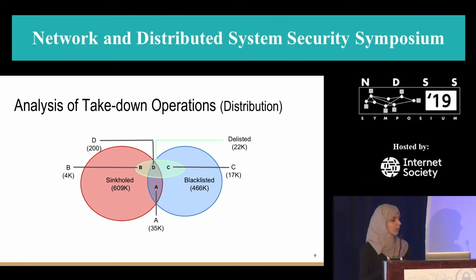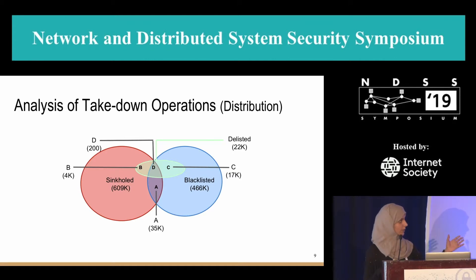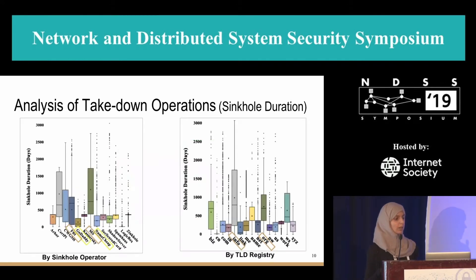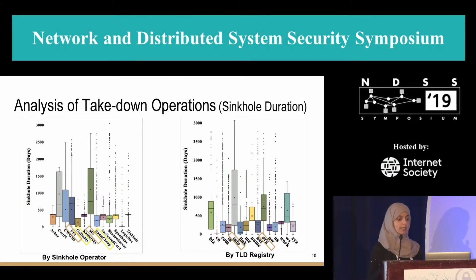This Venn diagram shows the distribution of our dataset. The red circle and the green region represent the delisted and sinkholed domains and their intersection with the blacklist. We then performed some analysis on the taken-down domains, concentrating on the sinkhole duration.